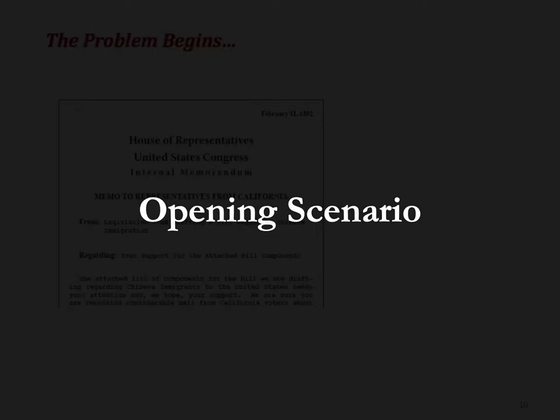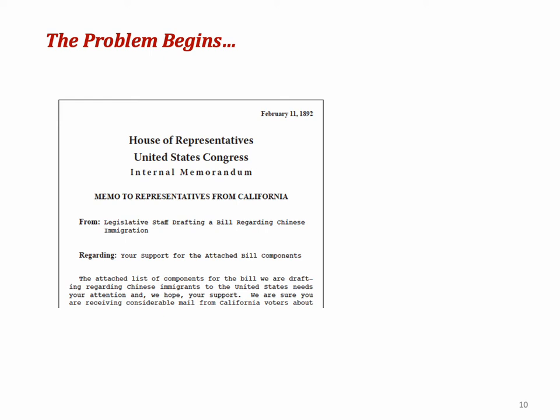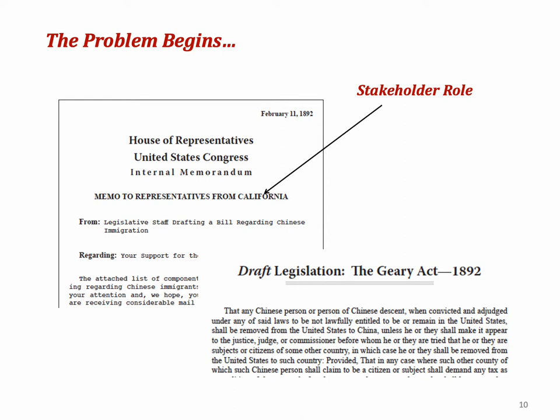The opening scenario introduces the problem, like the first chapter of a novel. It's carefully written to act as a catalyst, drawing questions from students that will lead them to content you want them to study. Excluded begins when students receive a memo addressed to congressmen from California, which they learn is their stakeholder role. The memo is from the legislative staff in charge of drafting a revision of some important legislation, the Geary Act, which will extend the Chinese Exclusion Act of 1882. A copy of the draft legislation is attached to the memo, along with a request that the novice congressmen review the document and make suggestions for revision.